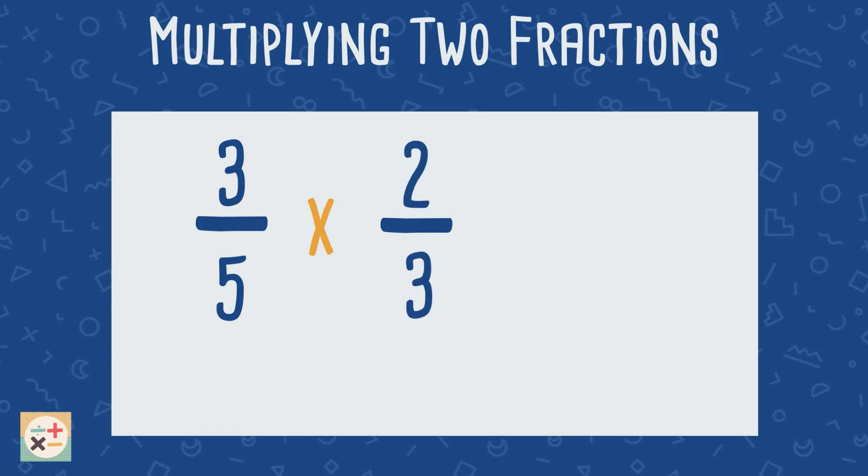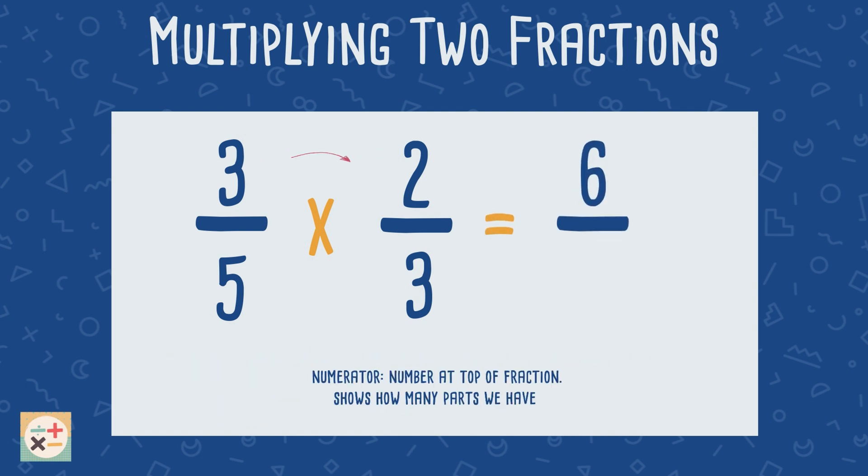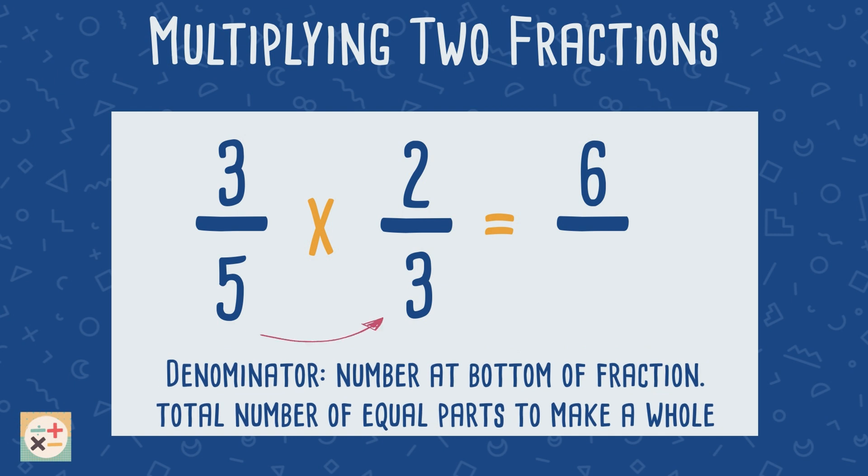To do this, all you have to do is multiply the numerators together, and then multiply the denominators.